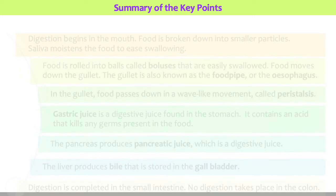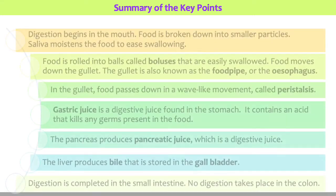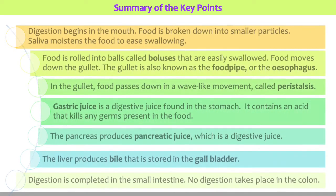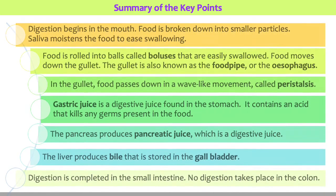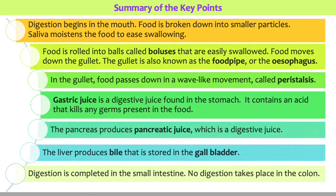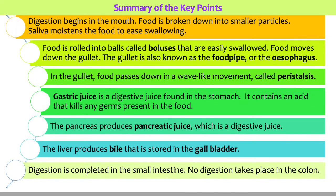Here is a summary of the key points. Digestion begins in the mouth, where food is broken down into smaller particles. Saliva moistens the food to ease swallowing. Food is rolled into balls called boluses that are easily swallowed. Food then moves down the gullet, also known as the food pipe or the esophagus, passing down in a wave-like movement called peristalsis.